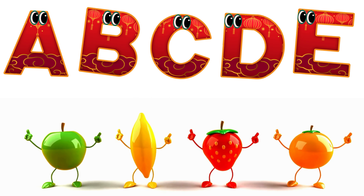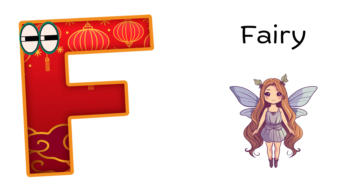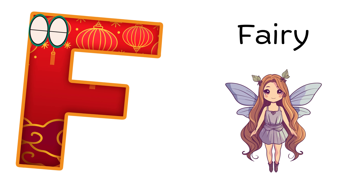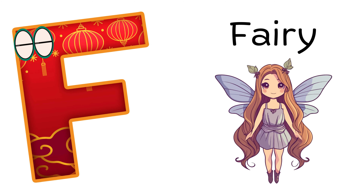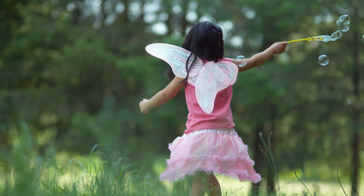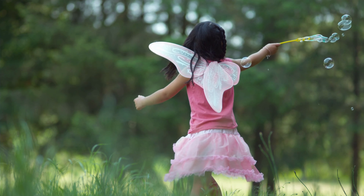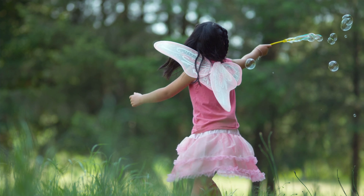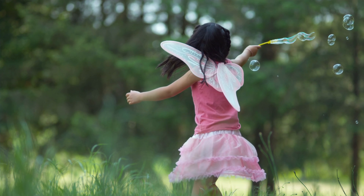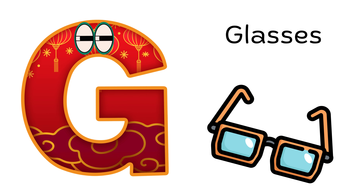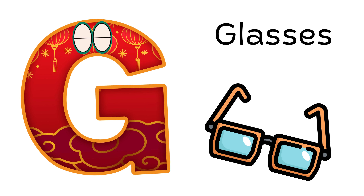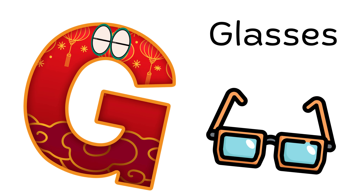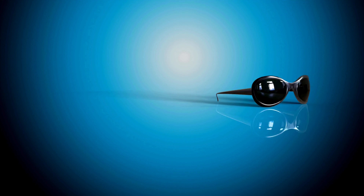E is for Elephant. A-A-Elephant, A-A-Elephant, E-Elephant. F is for Fairy. F-F-Fairy, F, Fairy, F, Fairy. G is for Glasses. G, G, Glasses, G, G, Glasses, G, Glasses.